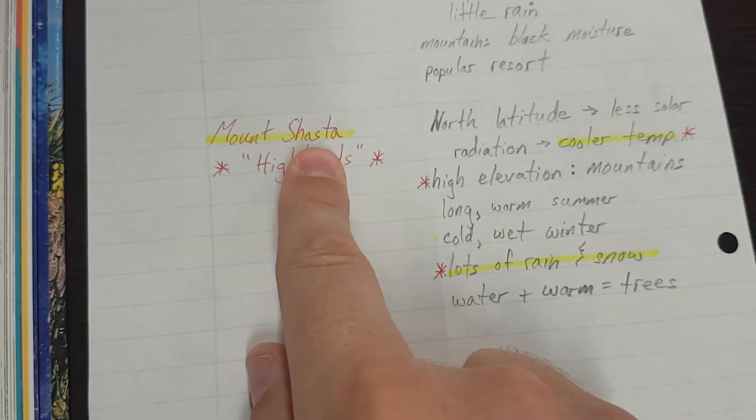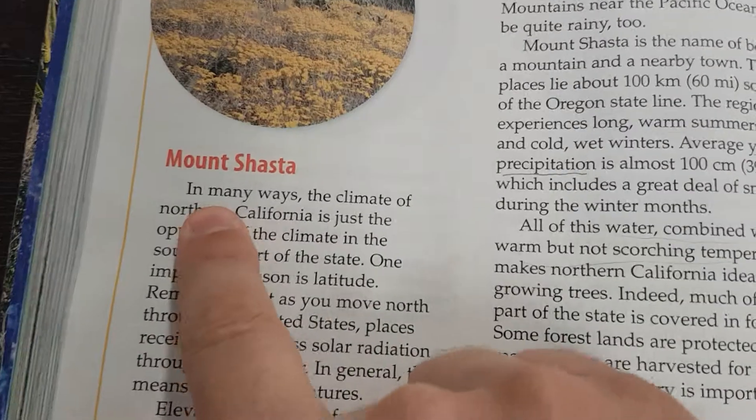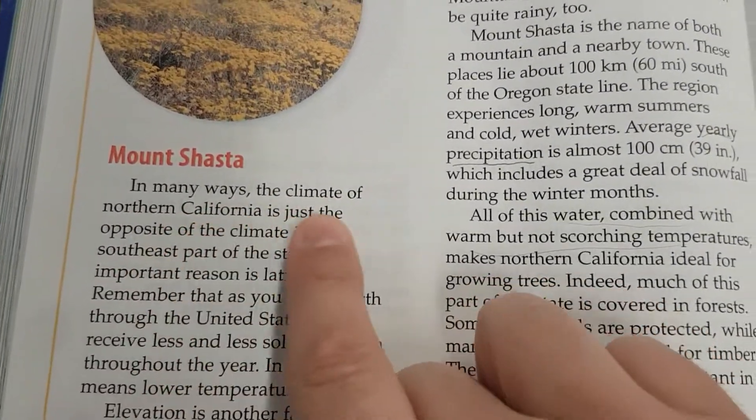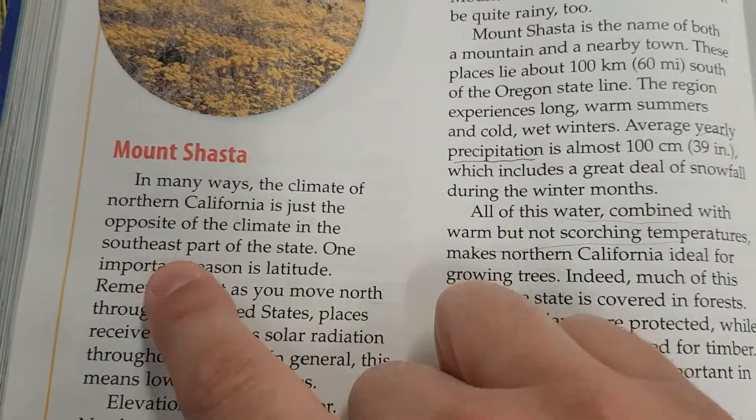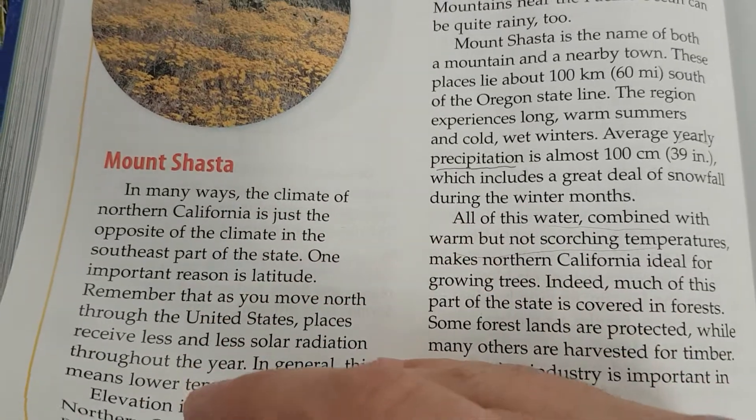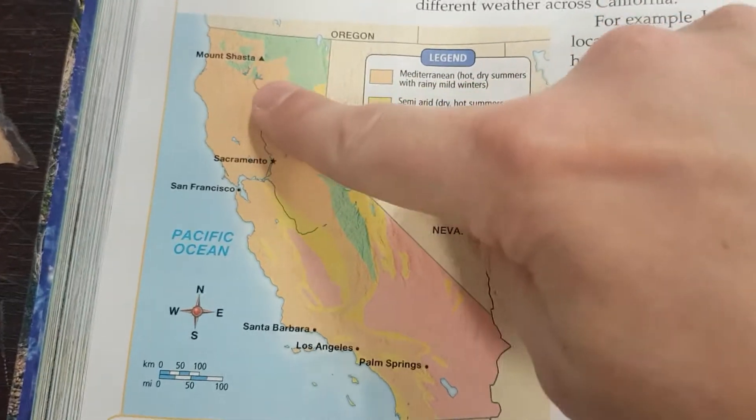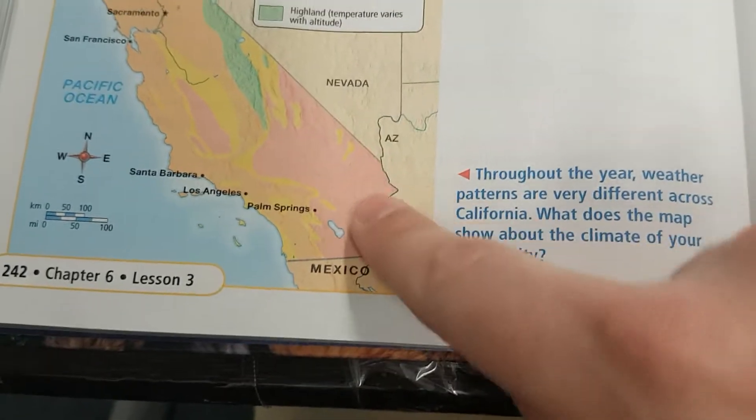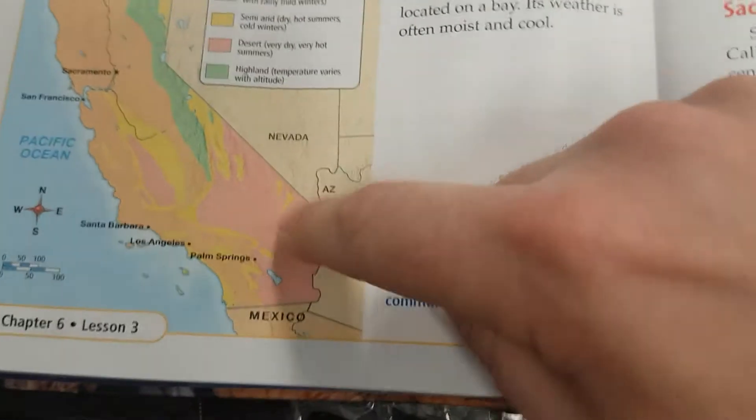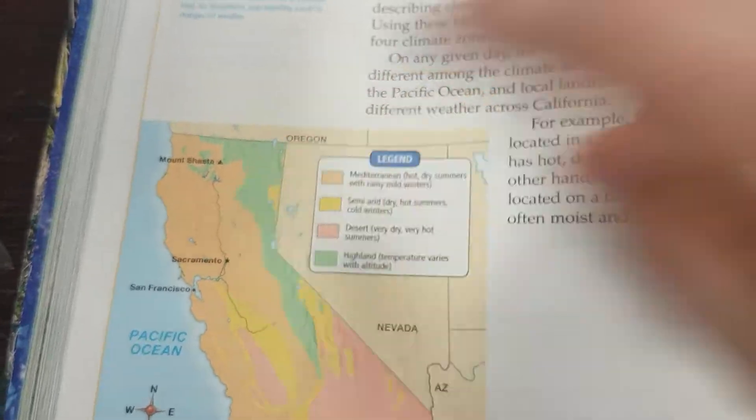Turn to page 246. Mount Shasta. In many ways, the climate of Northern California is just the opposite of the climate in the southeast part of the state. So what they're saying is the climate up here feels like the opposite over here. If this is hot and dry, then this is going to be cool and wet.